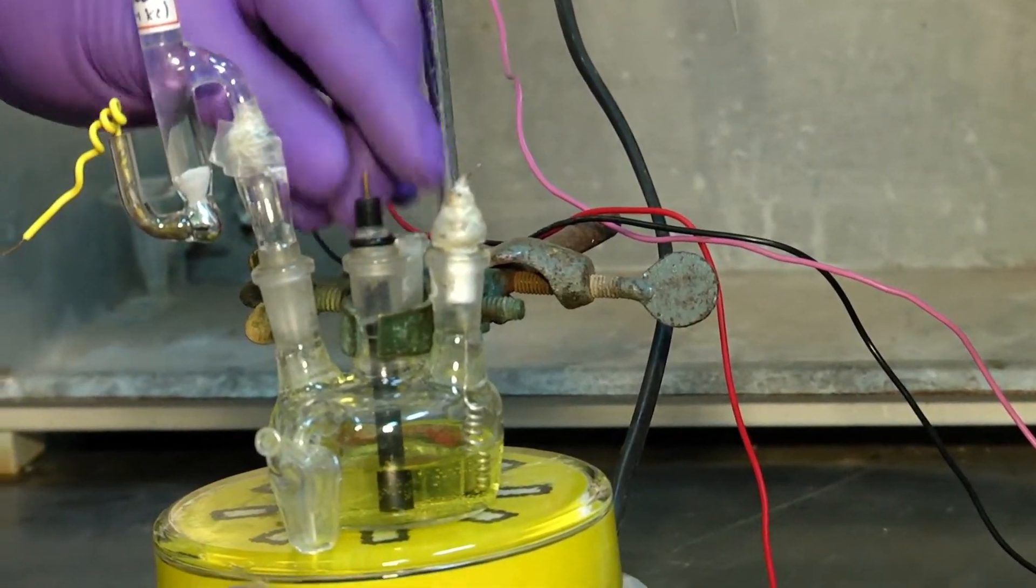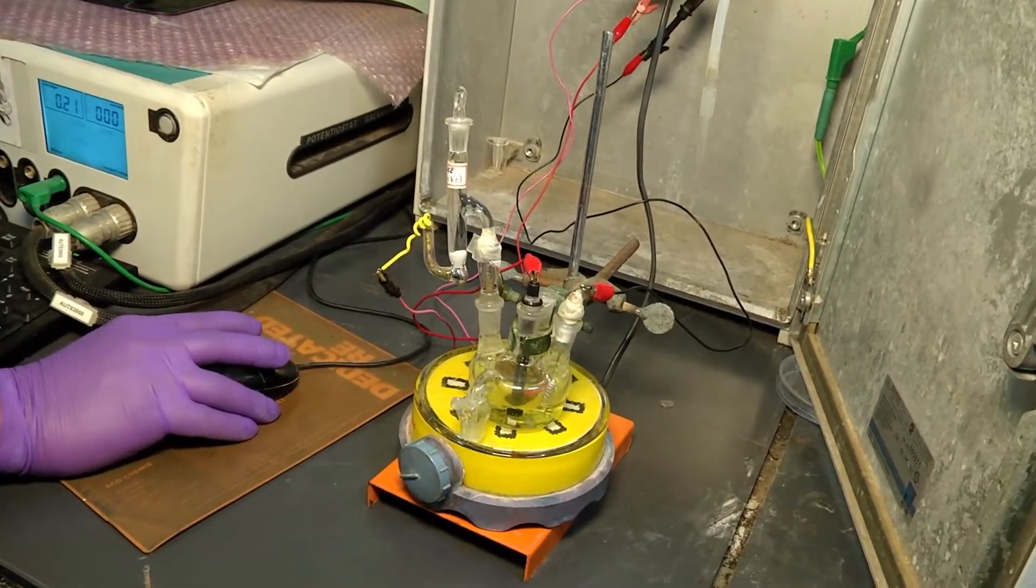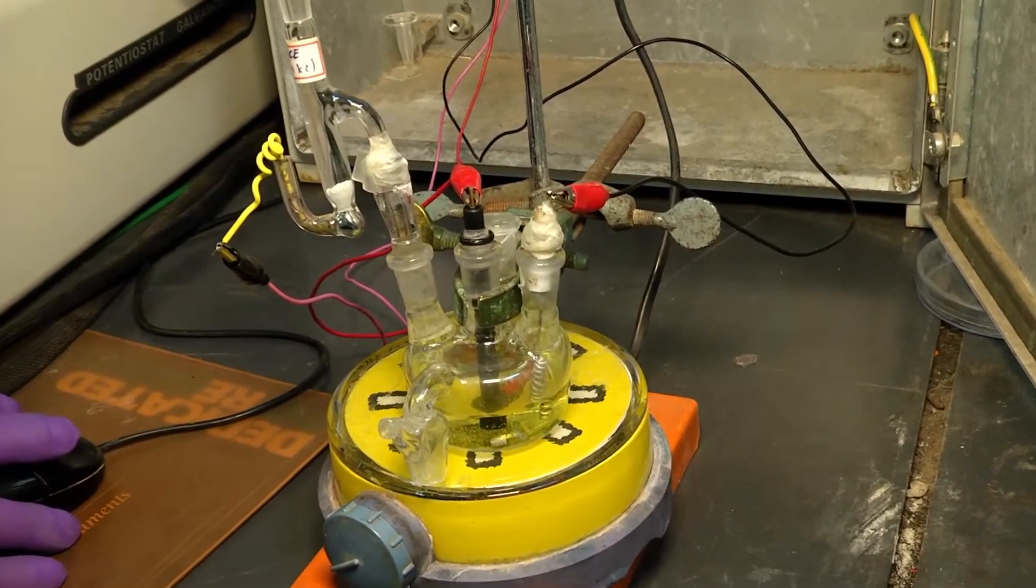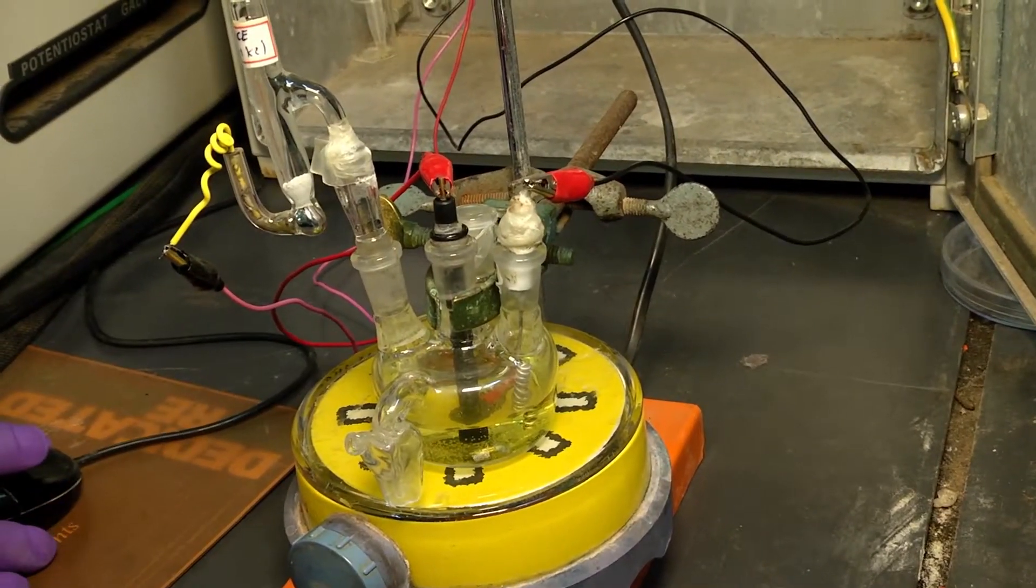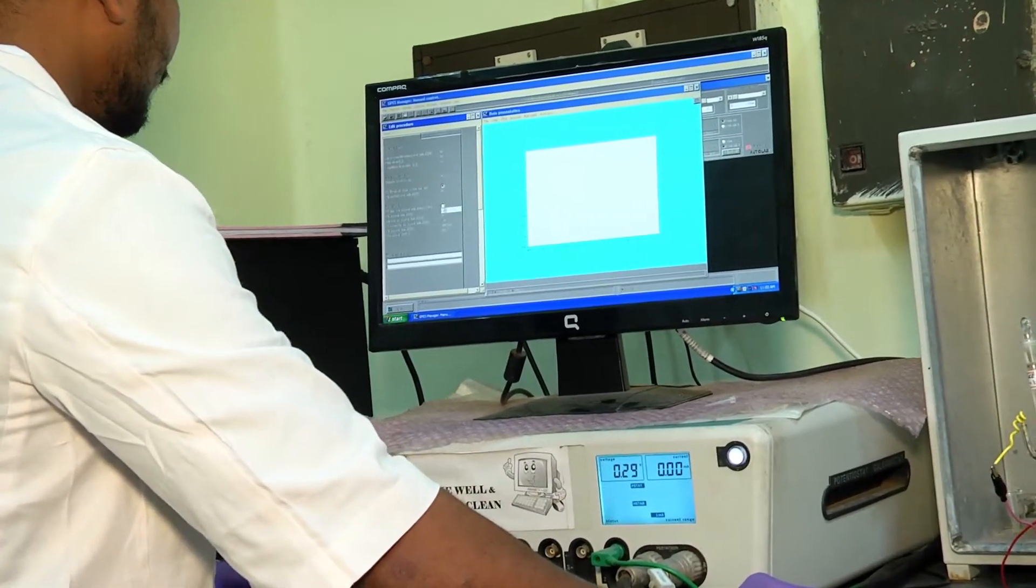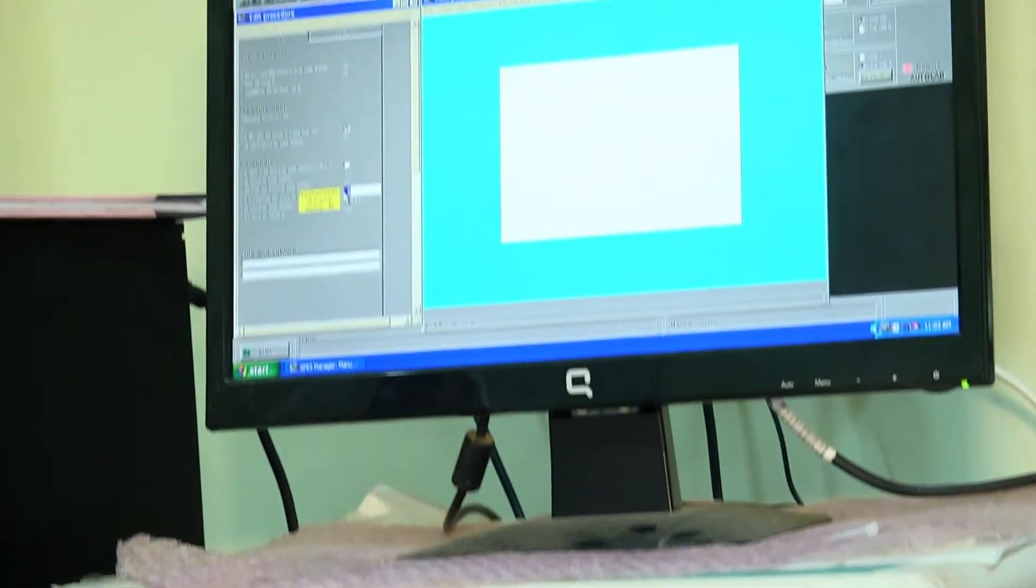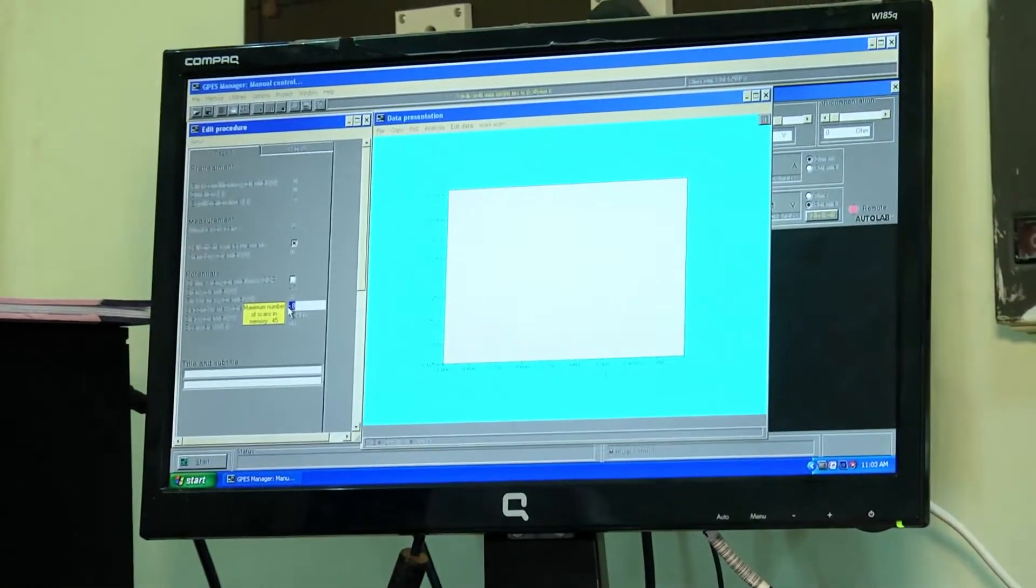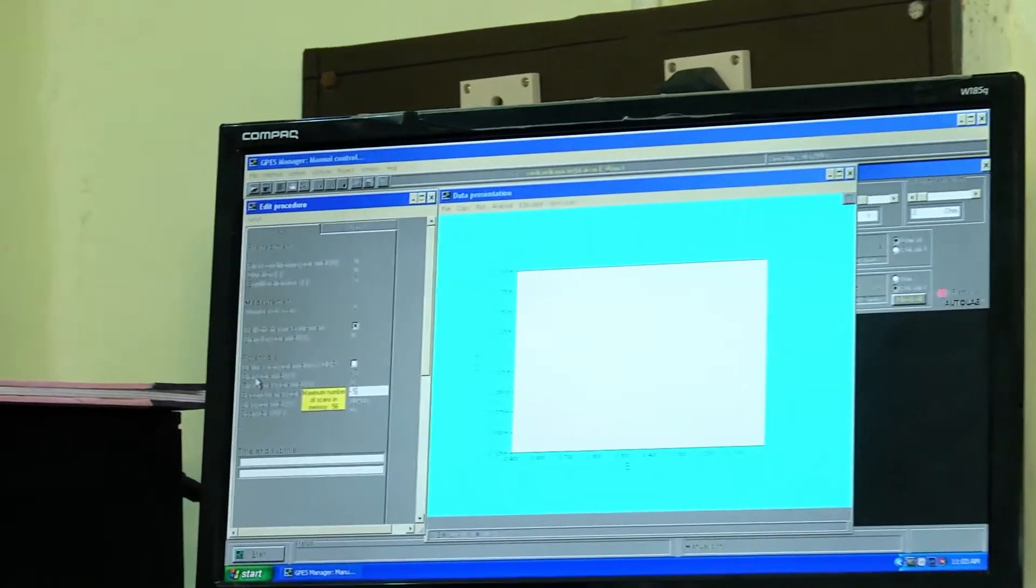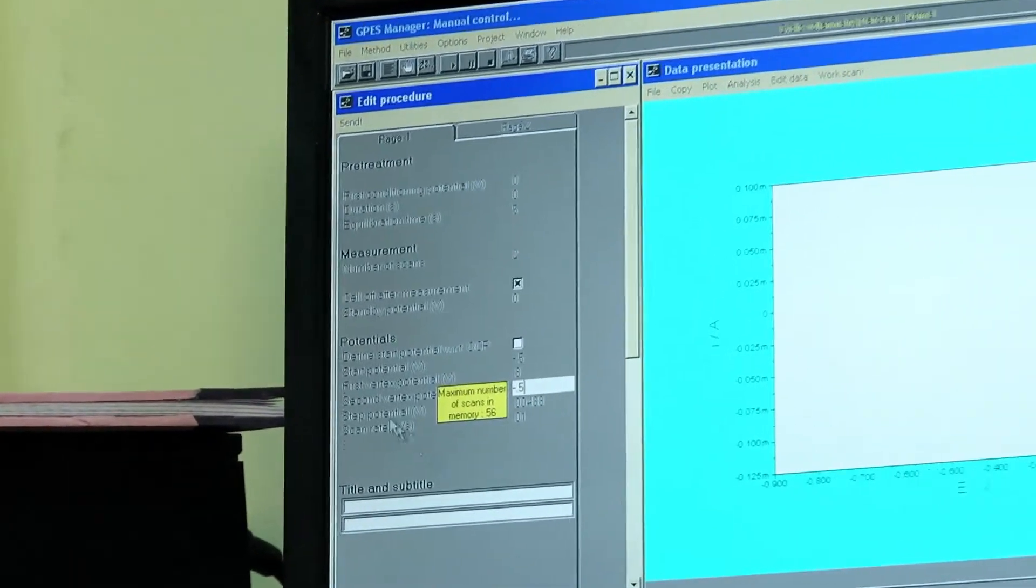The electrolyte consists of 5 millimolar potassium ferricyanide solution along with 0.1 molar KCl as a supporting electrolyte. CVs are recorded using autolab instrument within the potential range between minus 0.5 volt and 0.8 volt versus saturated calomel electrode at a fixed sweep rate of 50 millivolt per second.